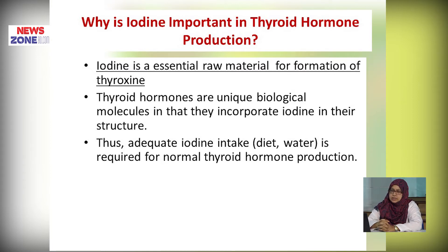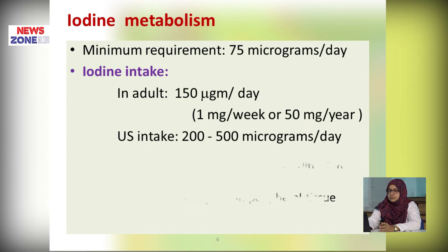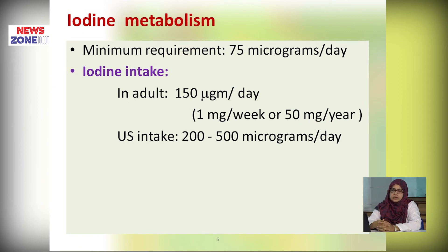Adequate iodine intake with diet and water is required for normal thyroid hormone production. Sources of iodine include exogenous sources such as iodinated bread, milk and dairy products, sea fish, or endogenous sources from the thyroid gland and by metabolism of T3 and T4 in peripheral tissues. The minimum requirement for thyroid hormone production is about 75 micrograms of iodine per day. Adult iodine intake is about 150 micrograms per day, or 1 milligram per week, or 50 milligrams per year, but in the UK it is more — 200 to 500 micrograms per day.